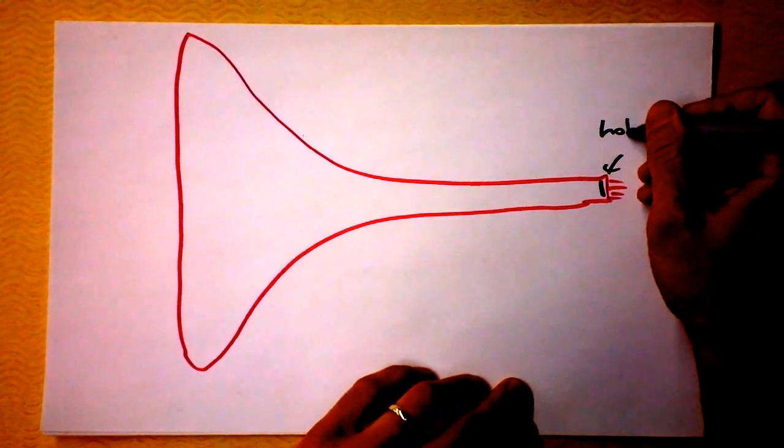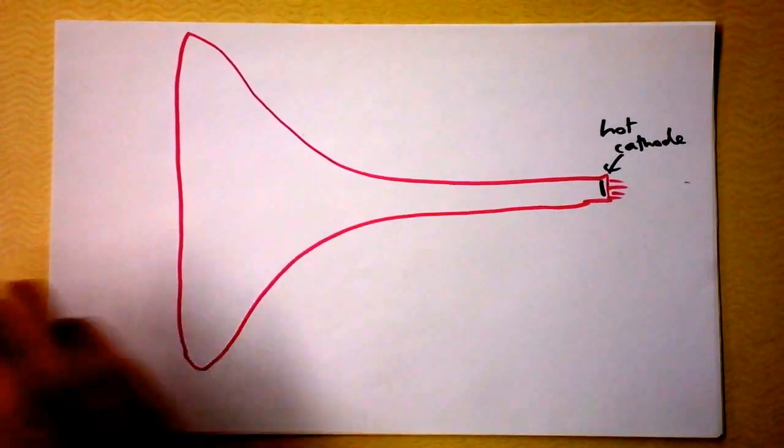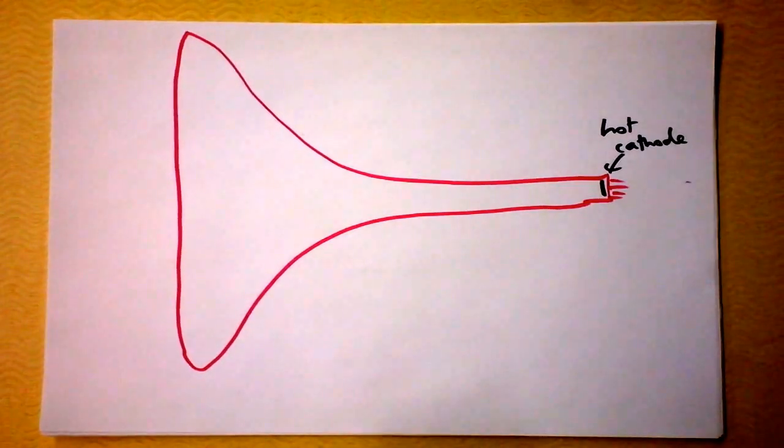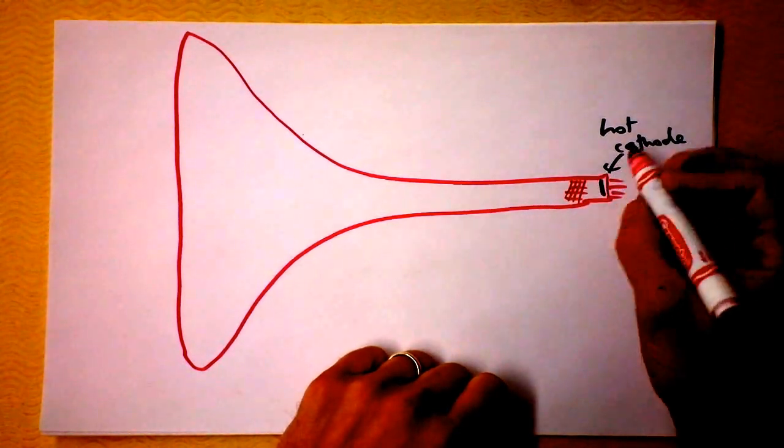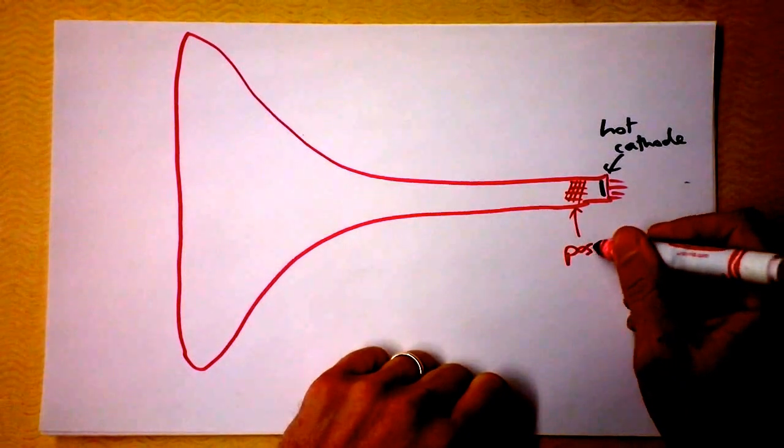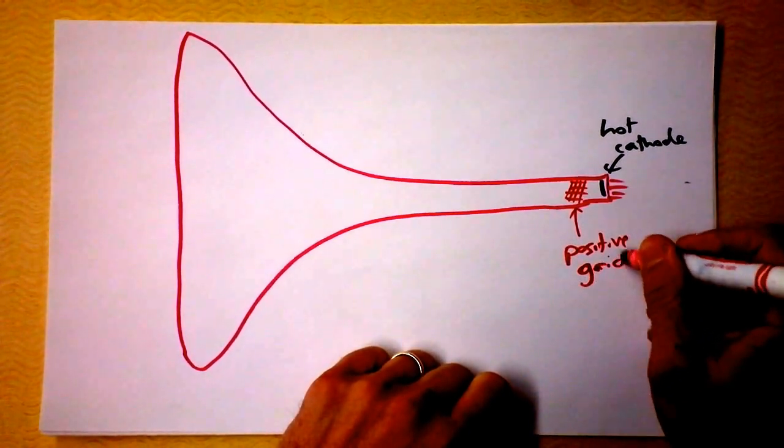So this is hot cathode, and you'd create a cathode ray by creating a positive grid in here, or a screen. It's just a screen of metal, positive. Well, let's call it a positive grid.